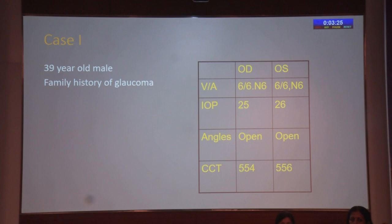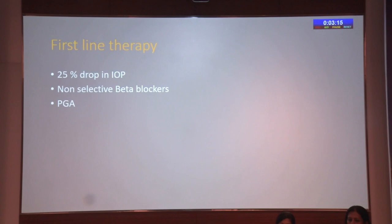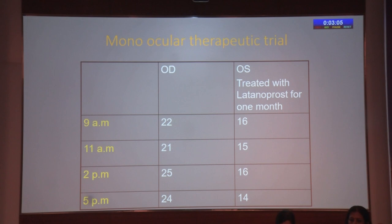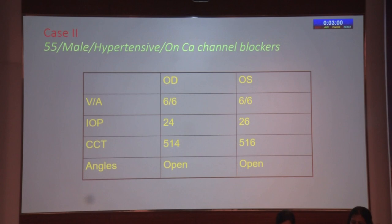For a 39-year-old male with IOP around 25 to 26 and open angles, the right eye disc is fairly normal while the left eye shows a nerve fiber layer defect — this is early glaucoma requiring at least a 25% drop in IOP. A choice between non-selective beta blockers or PG analogs is available. A monocular therapeutic trial was performed in the left eye, since the nerve fiber layer defect was present there, and a significant difference between the two eyes was noted.